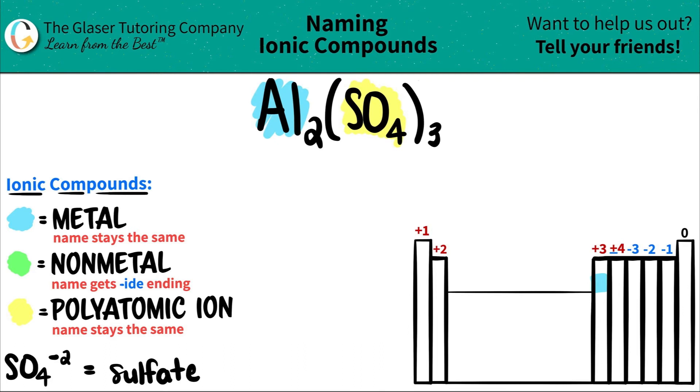Now we have the setup here, and now we're just going to name it. So since aluminum comes first, we're going to name the metal first. And the metal name, they always stay exactly the same. So aluminum is just going to stay aluminum.